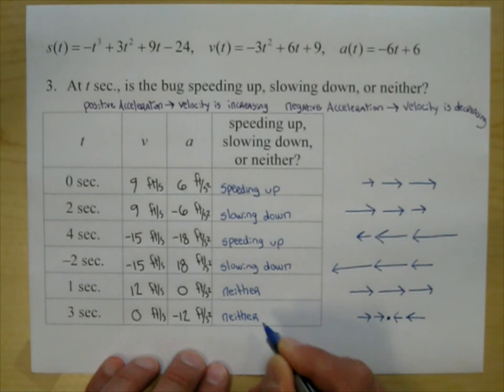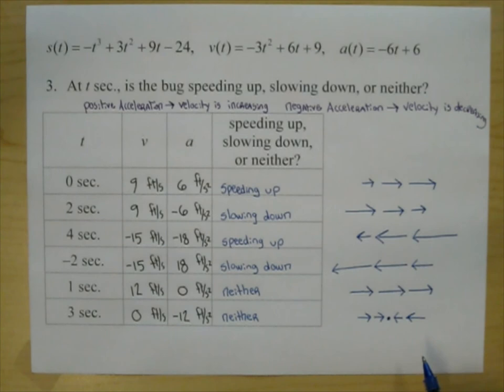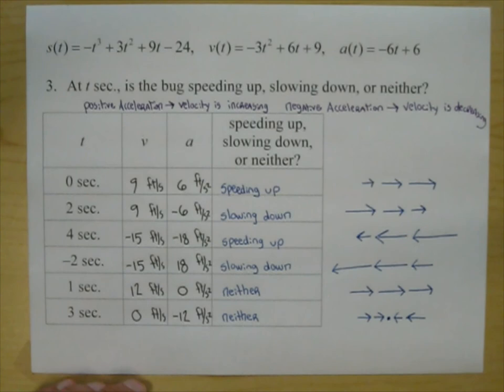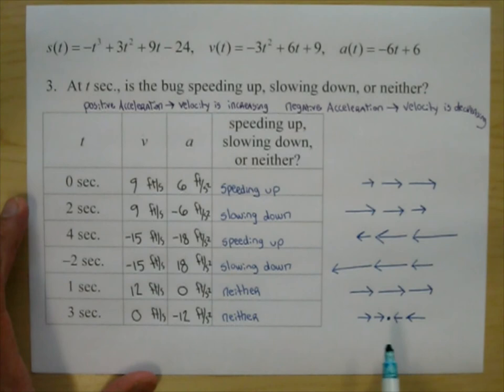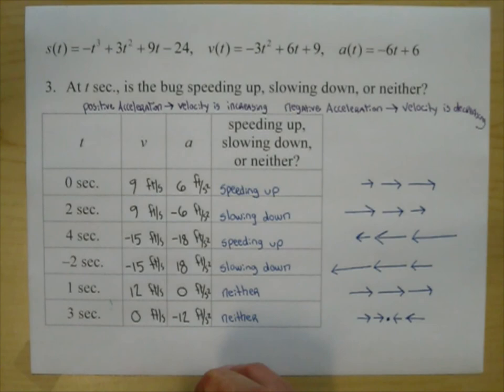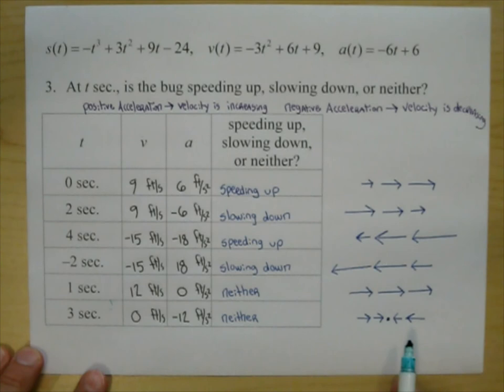That one's kind of a hard one to understand, but you can sit there and think about it. There's got to be a better way of doing these problems without drawing arrows. So what is a good way? Let's look at all the times where we're speeding up.